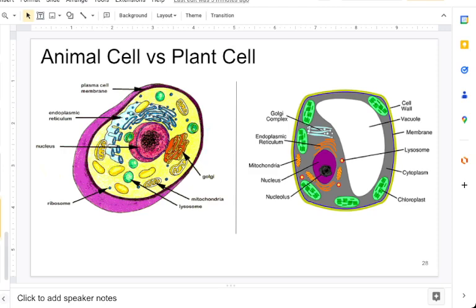We have the ER, the endoplasmic reticulum, both in plants and animal cells, just shaped a little bit differently in these two pictures. We have a Golgi complex or Golgi apparatus or Golgi body, whatever you want to call it. They are found in both, as well as lysosomes, cytoplasm, and the cell membrane, whereas animal cells lack a chloroplast and plant cells have a chloroplast. That's where you get that green color in plants.